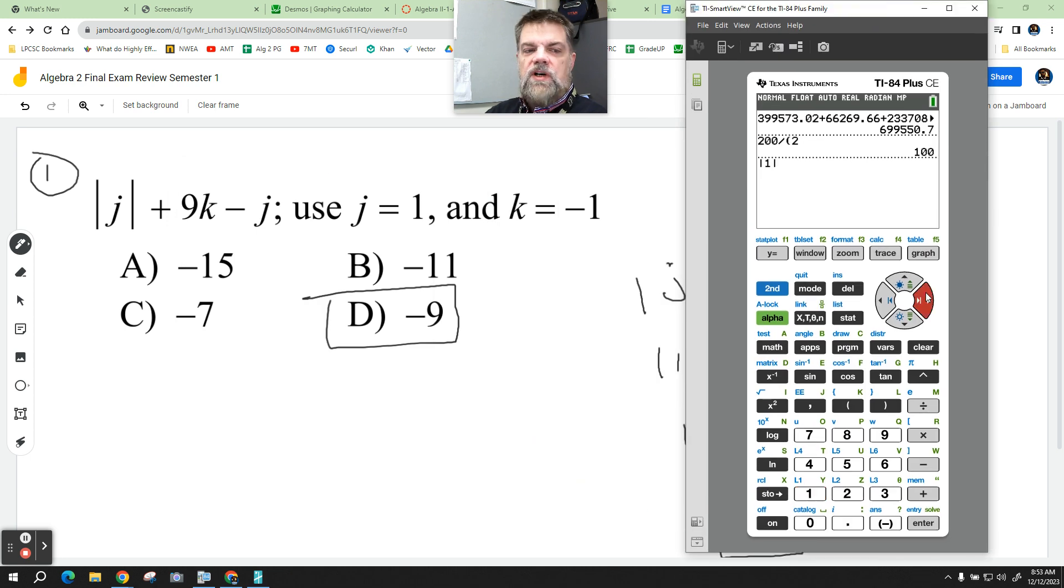J is positive 1, and then plus 9, and then in parentheses I'm going to put K, but K is a negative 1, right? Minus whatever J is, which is just, I'll put it in parentheses, 1. When I hit enter, obey him with the bacon sizzle. See how I did that?